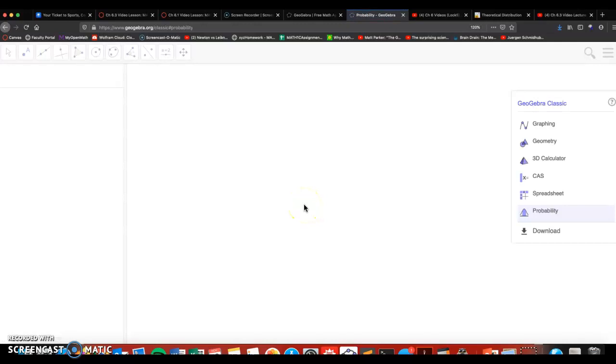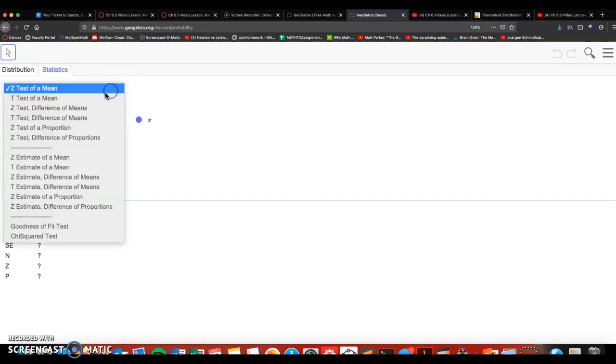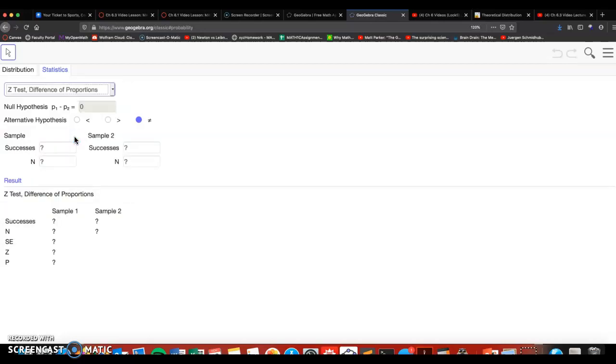Up here we're going to click on statistics, and this drop down menu here, these are all the options for chapter 6. We're doing hypothesis test and difference of proportions.